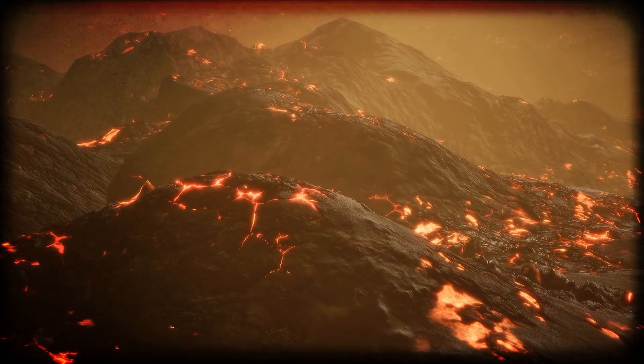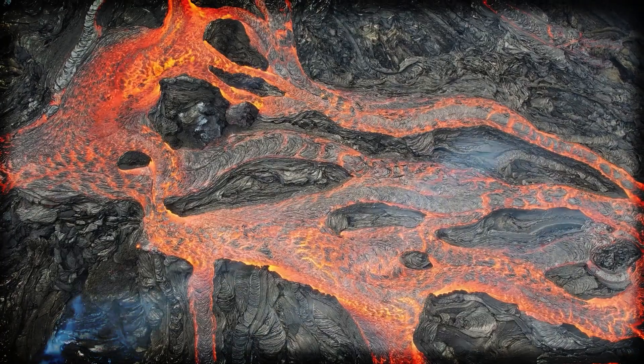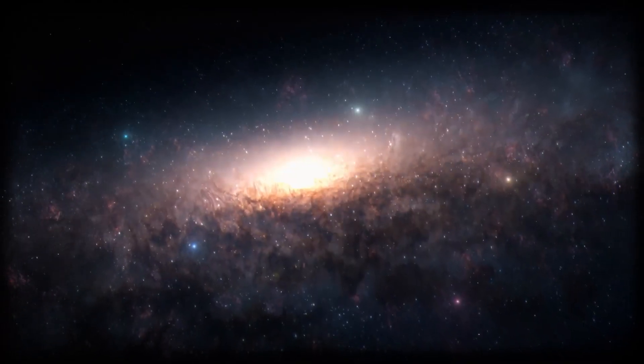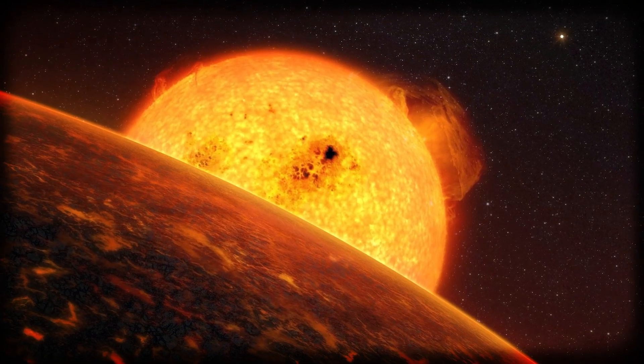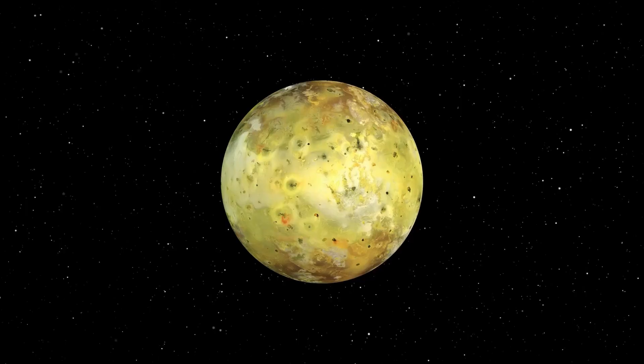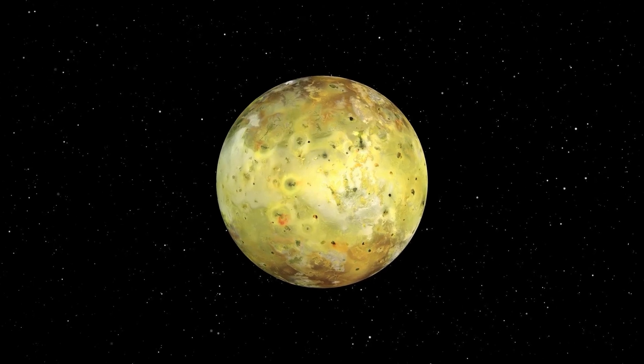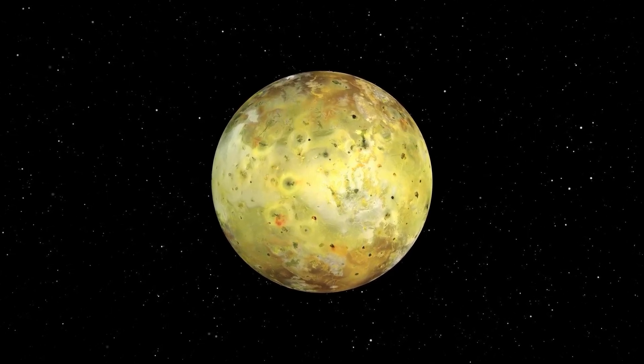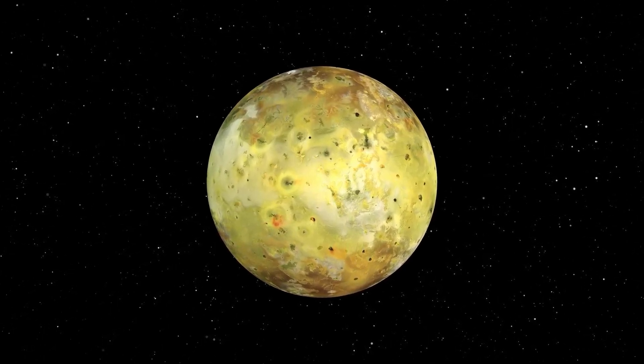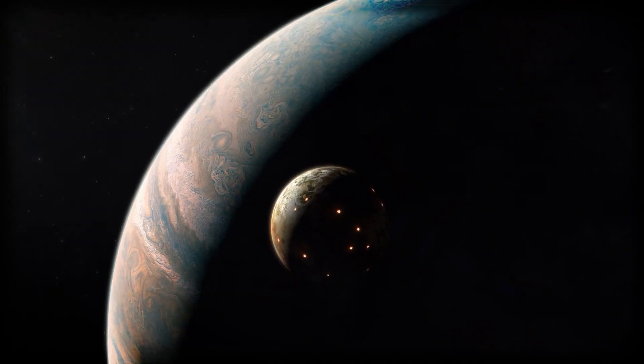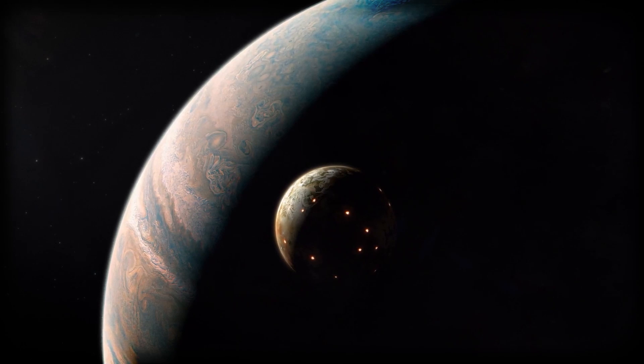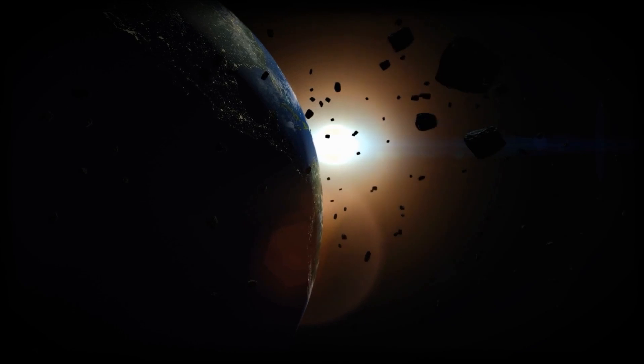Lava planets, scorching hot worlds with molten surfaces orbiting dangerously close to their stars. Some of these may be what scientists call Chthonian planets, the leftover cores of hot Jupiters that had their atmospheres stripped away over time. And then there are the mysterious Trojan planets, theoretical worlds that share orbits with bigger planets. None have been confirmed yet, but they remain an exciting possibility.